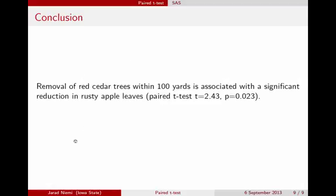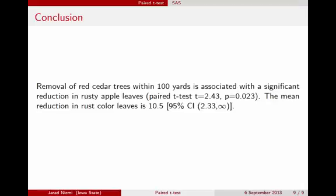So if we're going to write this as a statistical conclusion, we can say the removal of red cedar trees within 100 yards is associated with a significant reduction in rusty apple leaves by a paired t-test with p-value 0.02. And the mean reduction in rust-colored leaves, an estimate is 10.5, with a 95% one-sided confidence interval, 2.33 to infinity. Thank you.